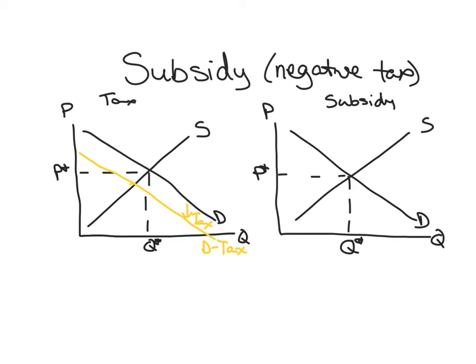So the outcome is then a lower number of transactions, QT. And that lower number of transactions is accomplished by creating a price distortion for producers and consumers. So producers now get a lower price while consumers pay a higher price.